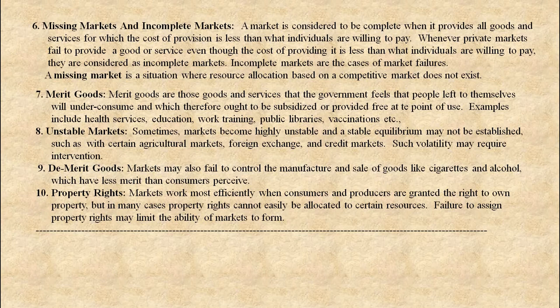Seventh cause: Merit goods. Merit goods are those goods and services that the government feels people, left to themselves, would under-consume, and which therefore ought to be subsidized or provided free at the point of use. Examples include health services, education, work training, public libraries, vaccinations, etc.